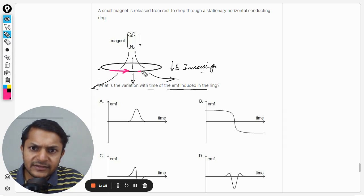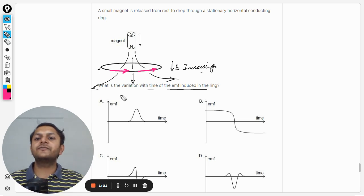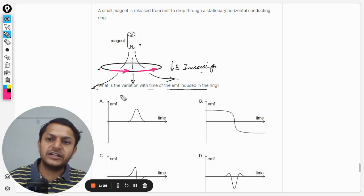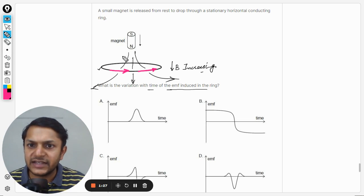So it means that the current will move like this. The current will move like this and it is going to create a magnetic field which is in the opposite direction.